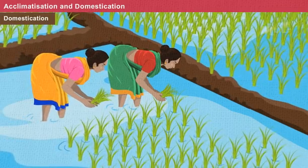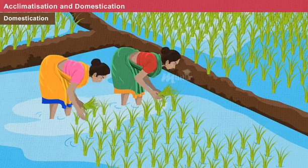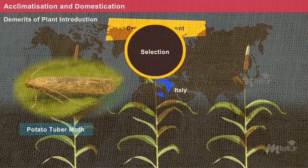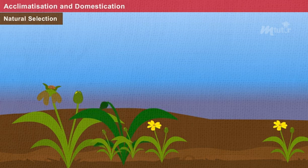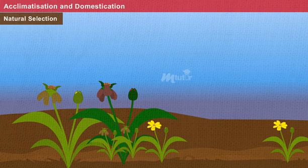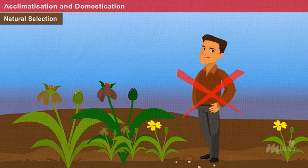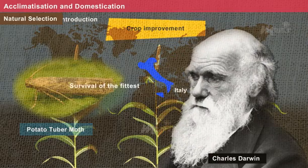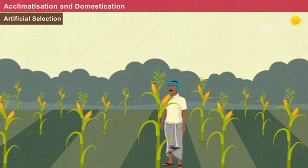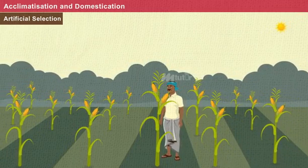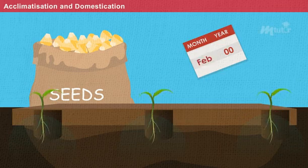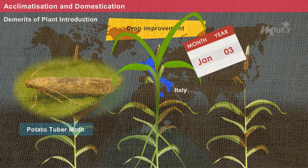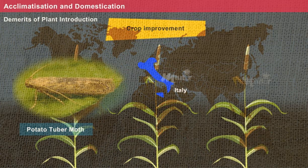Domestication is the process by which plants are genetically modified over time according to the requirements of humans. Crops can be domesticated by two methods: natural selection and artificial selection. Natural selection, as the name implies, occurs through natural means without any human interference. This was theorised by Charles Darwin as survival of the fittest. Artificial selection, also called selective breeding, involves selecting a plant with better qualities for the breeding programme. The breeding process is repeated for several generations and the variety with better vigour is multiplied and released. Four types of selection processes are involved in artificial selection.